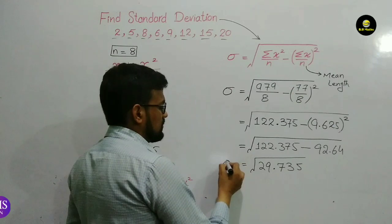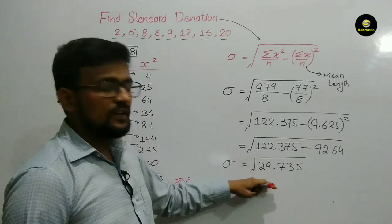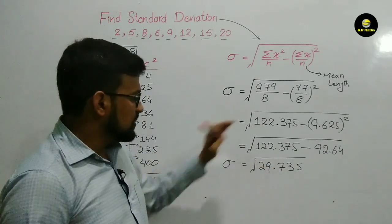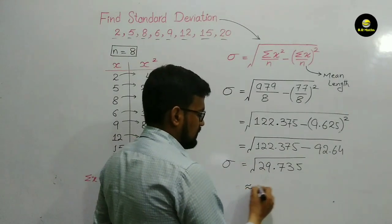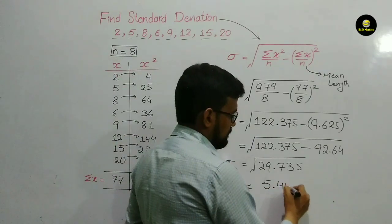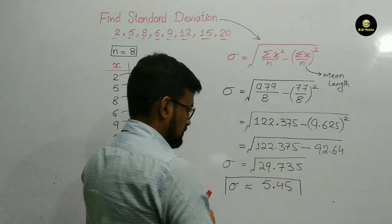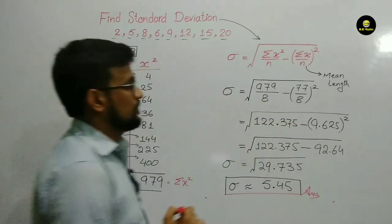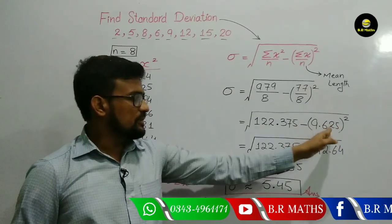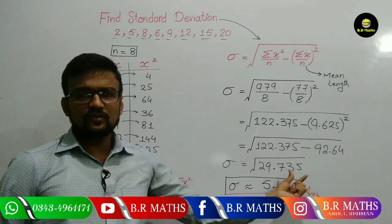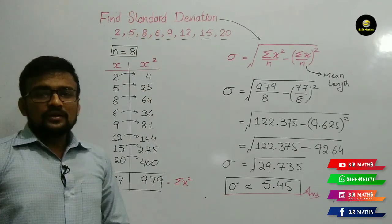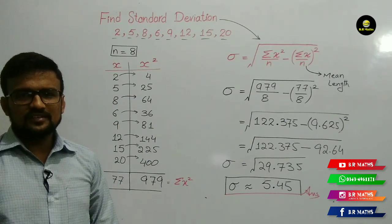This value, 29.735, is called the variance. When we take the square root of the variance, the result is 5.45 — this is the standard deviation of the given data. So to summarize: the mean is 9.625, the variance is 29.735, and the standard deviation is 5.45. I hope you understand. If you like this lecture, please like it and subscribe to my channel. Thank you for watching, take care.